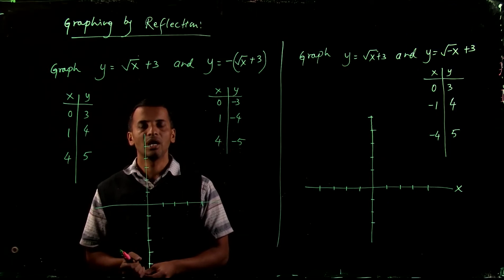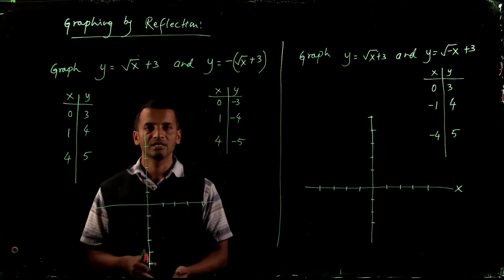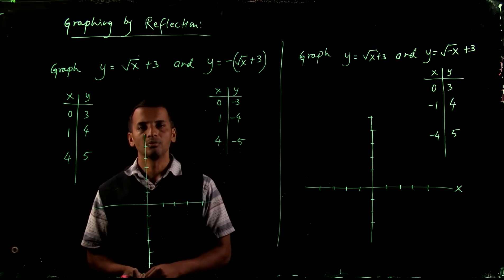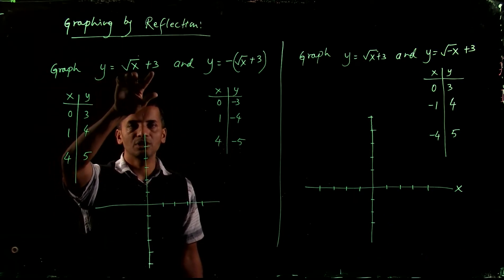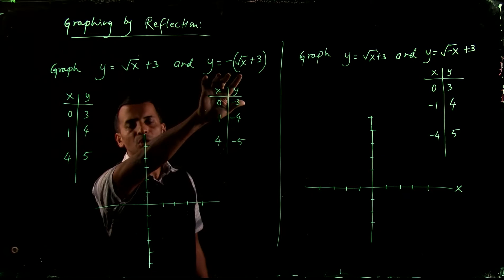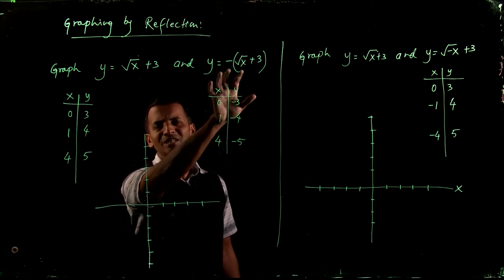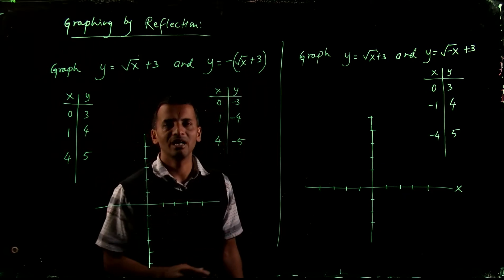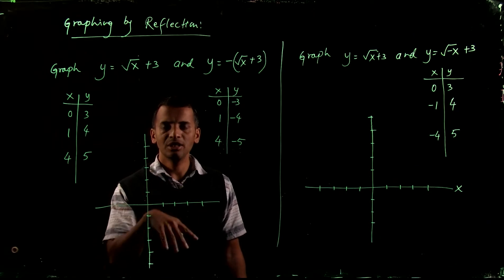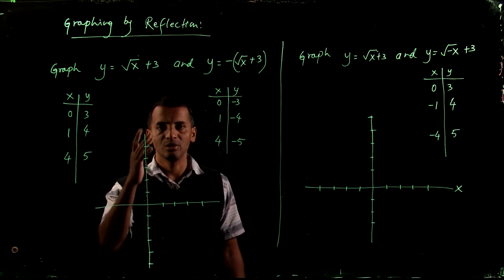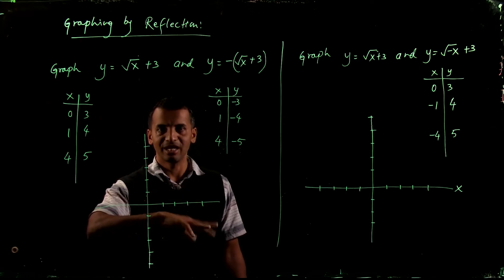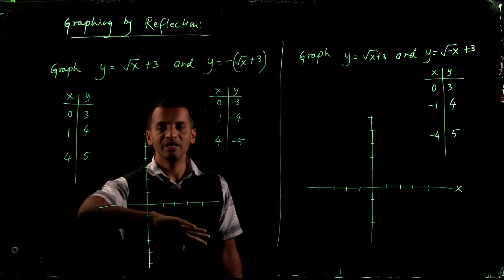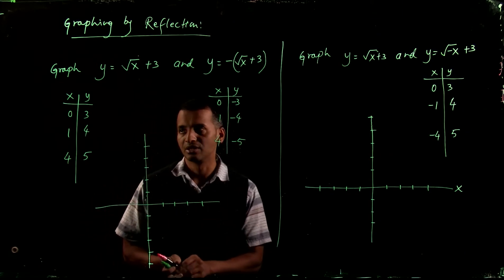In this video I'll show you how to reflect a graph about the x-axis and y-axis from the equation. So let's graph two equations: y equals 2 square root of (x plus 3). In the second equation the whole right-hand side is multiplied by a negative sign, meaning the y values are multiplied by negative 1. You can guess where it will be reflected. When y is replaced by negative y, it should be a reflection about the x-axis.